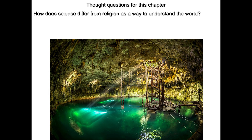Thought questions for the chapter: how does science differ from religion as a way to understand the world? It's believed by most people that cosmology was the first science — questions like how did we get here and what's going on in the sky at night have been discussed by humans as long as we've had ways to communicate, and ultimately cosmology evolved into religion. Religion requires belief in the statements made by that religion, whereas science tries to convince you that statements are correct by proving them. In a very basic way, religion requires belief, and science requires understanding that can be used to generate a new belief.